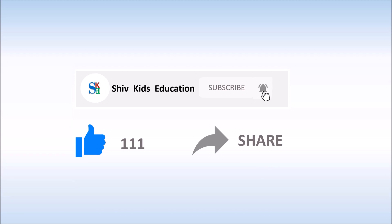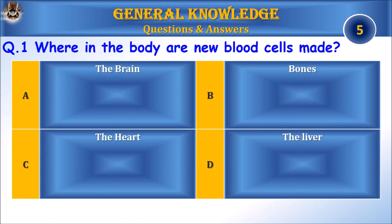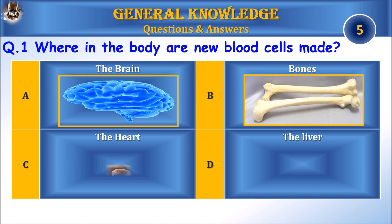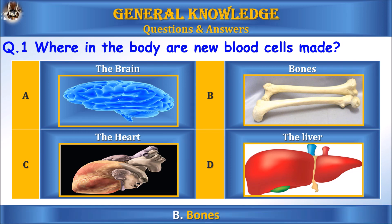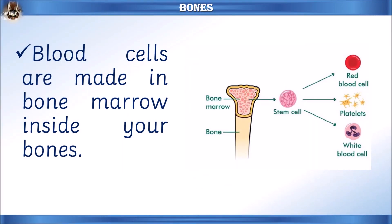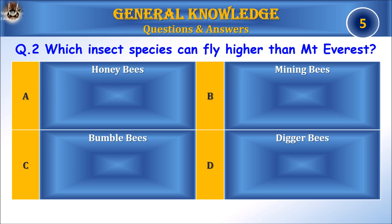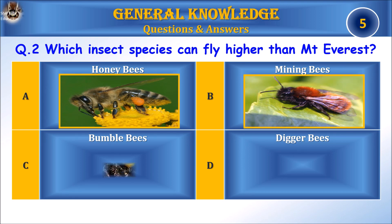Question 1: Where in the body are new blood cells made? A) the brain, B) bones, C) the heart, or D) the liver. Answer: B) bones. Let's learn some facts — blood cells are made in bone marrow inside your bones.